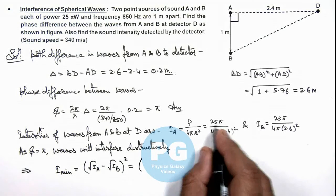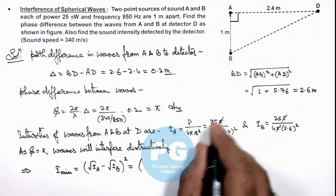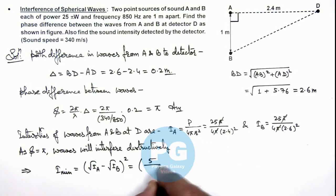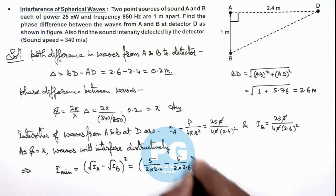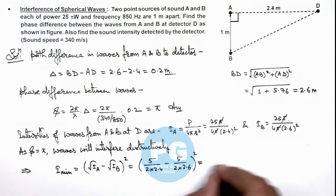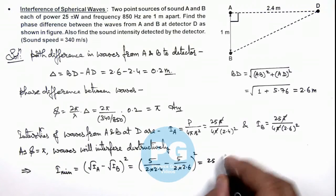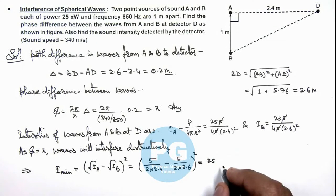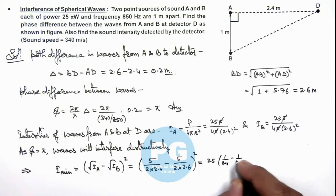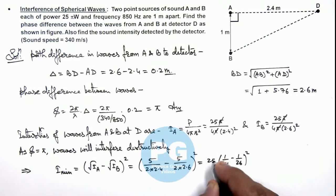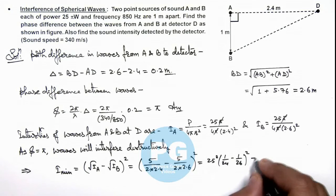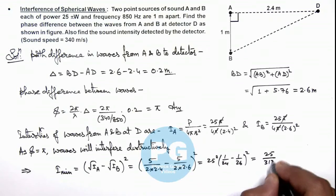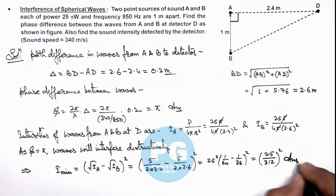So if we substitute the values, this will give us, here π already gets canceled out, and this will give us 5 by 2 multiplied by 2.4 minus 5 by 2 multiplied by 2.6 whole squared. This will give us 25 multiplied by, this value we'll see is giving us 1/24 minus 1/26 whole squared. So this numerical value will come out to be 25/312 whole squared. That is the result of this problem.